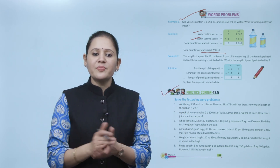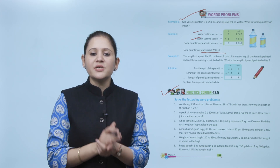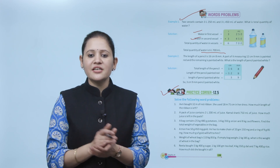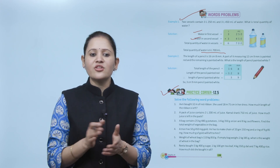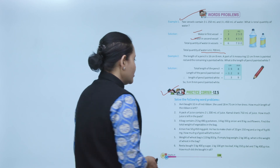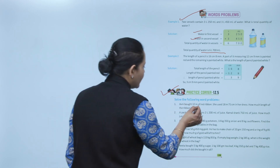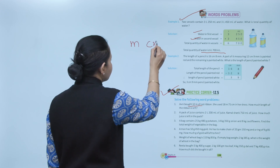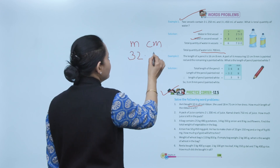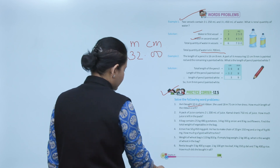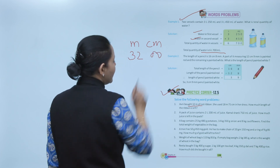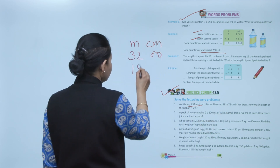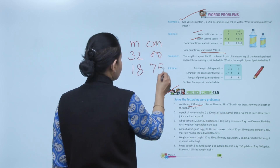Practice Corner 12.5: word problem. Ana bought 32 meters of red ribbon. She used 18 meters 75 centimeters in her dress. How much ribbon is left? Total ribbon = 32 meters. She used 18 meters 75 centimeters, so we subtract.